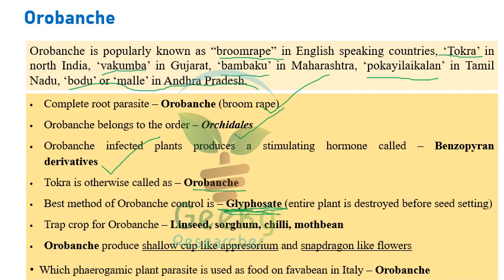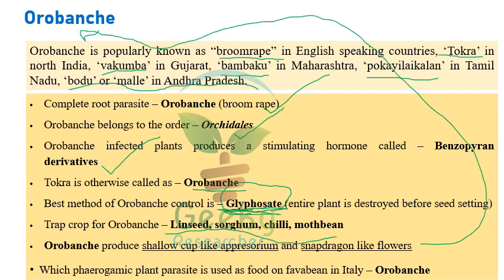Warabanki produces a hormone called benzopyrone derivatives. The best method of controlling Warabanki is application of the herbicide glyphosate, which entirely destroys seed setting. Trap crops for Warabanki include linseed, sorghum, chili, and moth bean. Warabanki produces shallow cup-like haustoria and snapdragon-like flowers - a frequently asked exam question.